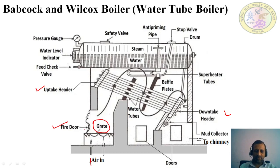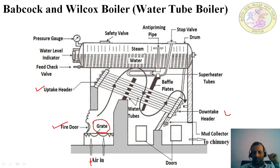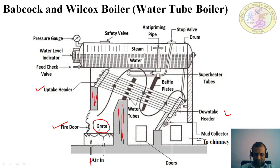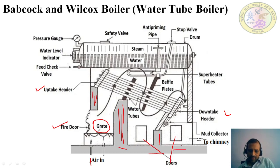Once the fuel burns inside the grate it liberates heat, and the resulting flue gases move in a curved direction. The things shown here are called brick walls or brick works. Two doors are provided through which a person can enter inside the boiler to carry out repair work.